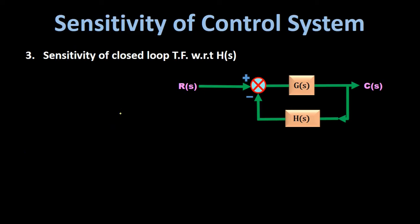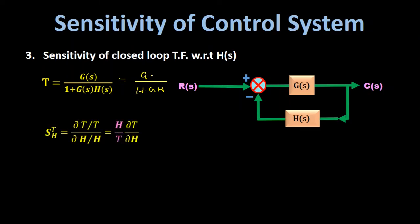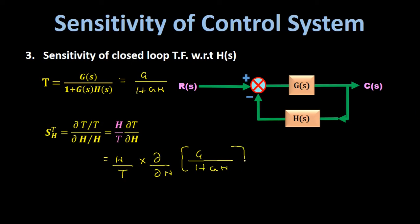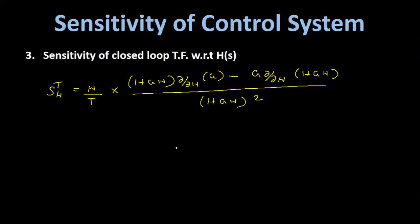Next we derive the sensitivity of the closed loop transfer function with respect to feedback part transfer function H(s). For the closed loop system with negative feedback, T = G/(1+GH). According to the definition, S_TH equals (ΔT/T)/(ΔH/H) = (H/T)·(∂T/∂H). Substituting T, we take the partial differentiation of G/(1+GH) with respect to H.